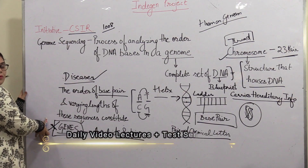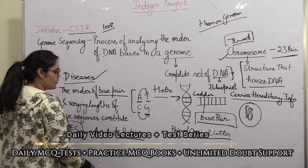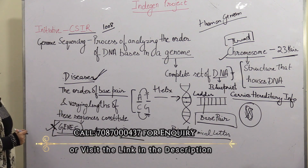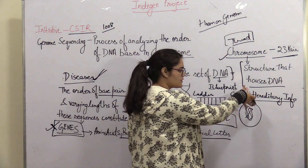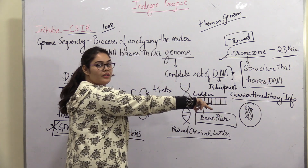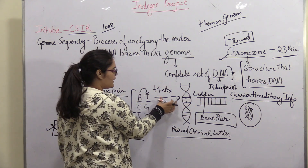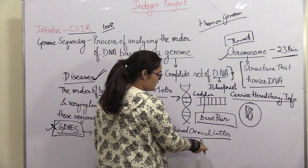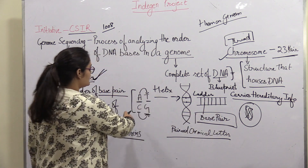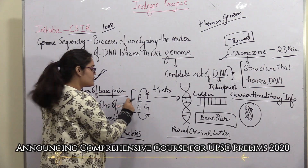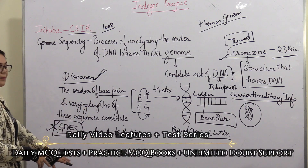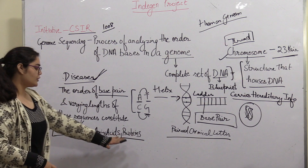If genes are altered, mutations will happen, proteins will be affected, and you can develop diseases. So to summarize what we have seen: cell → chromosome → DNA → genes. Genes are made of nucleotide base pairs: A pairs with T, C pairs with G. The sequencing of these base pairs forms your genes. Genes are related to proteins, and malfunctioning proteins are related to diseases.